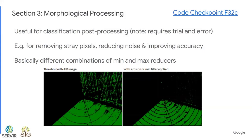Morphological processing is useful for classification post-processing, though it does require some trial and error to find the right combination of filters. There's kind of no one best way — it's a little art along with your science. These filters are helpful for removing stray pixels, reducing noise, and improving accuracy for classifications. They're basically different combinations of minimum and maximum reducers.